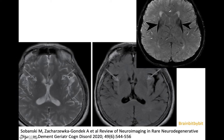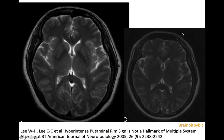This hyperintense putamenal rim, of which this is another example, is often described in the literature. And also the iron deposition, which is better visible on susceptibility-weighted images. But the hyperintense putamenal rim is not exclusive for multi-system atrophy when it comes to a 3 Tesla scan.